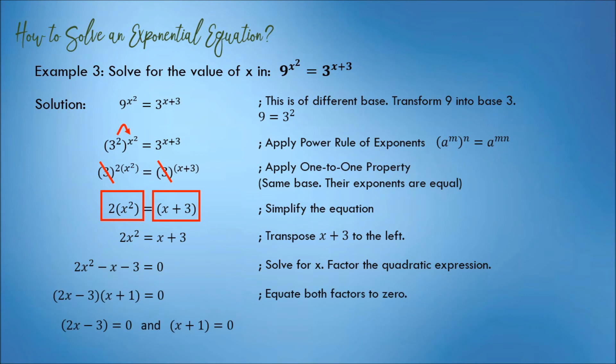The factors are 2x minus 3 and x plus 1. Equate both factors to 0, then solve. Therefore, the values of x are 3 over 2 and negative 1.